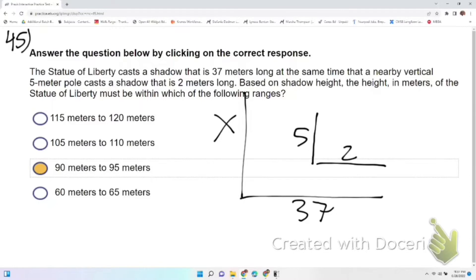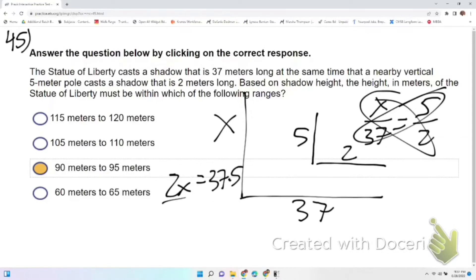I'm going to use this as a proportion to find the answer. 5 over 2 equals x over 37. We're going to cross multiply, so we get 2x equals 37 times 5. So 37 times 5, and to get x by itself...